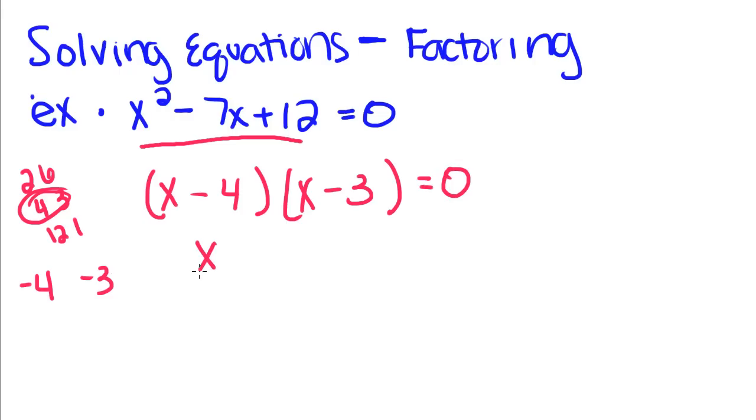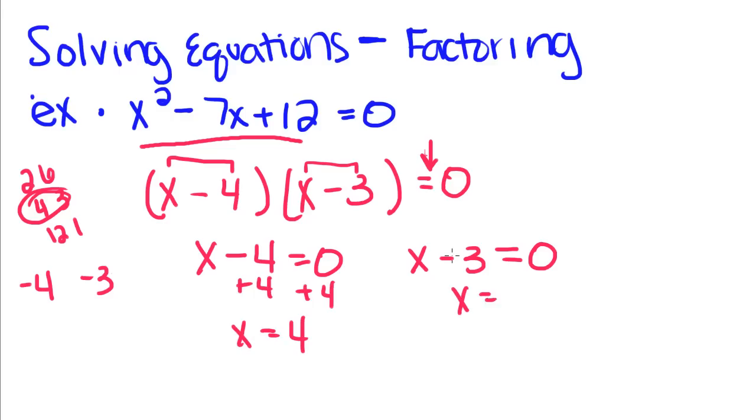Then we take each one of these factors and set it equal to zero. Now we do this because if you remember, whenever you multiply a number by zero, it's going to give you zero. So this equation is going to equal zero whenever one of these two factors equals zero. They can both equal zero or just one of them can equal zero. So we set these equal to zero and then we add 4 to both sides of this equation and we add 3 to both sides of this equation. So x is equal to 4 and x is equal to 3. That's the solution for this equation up here.